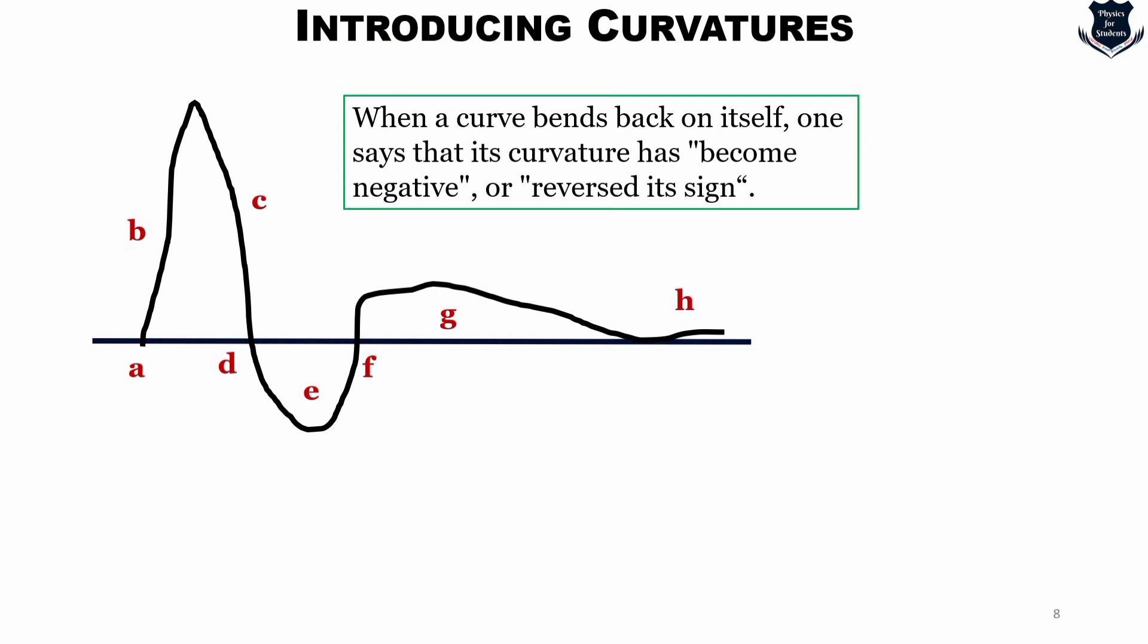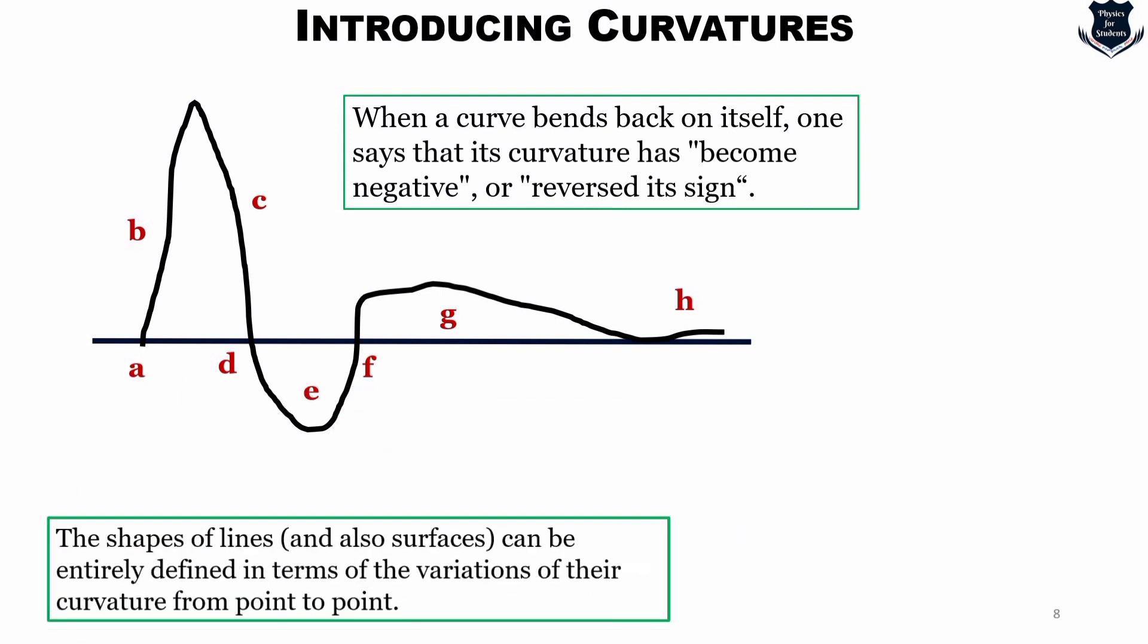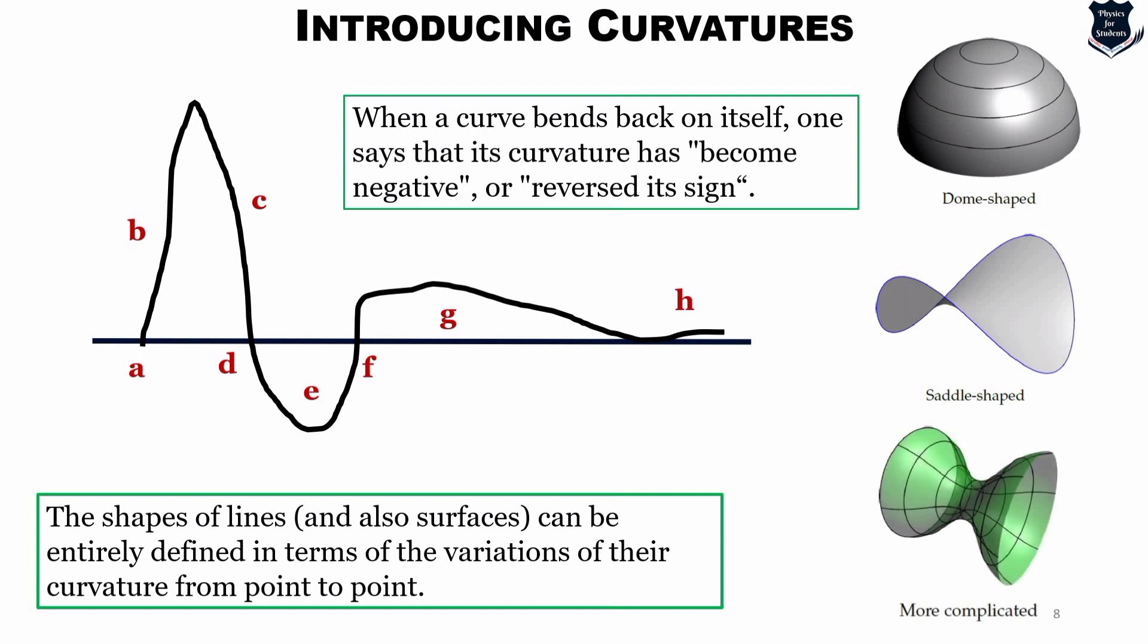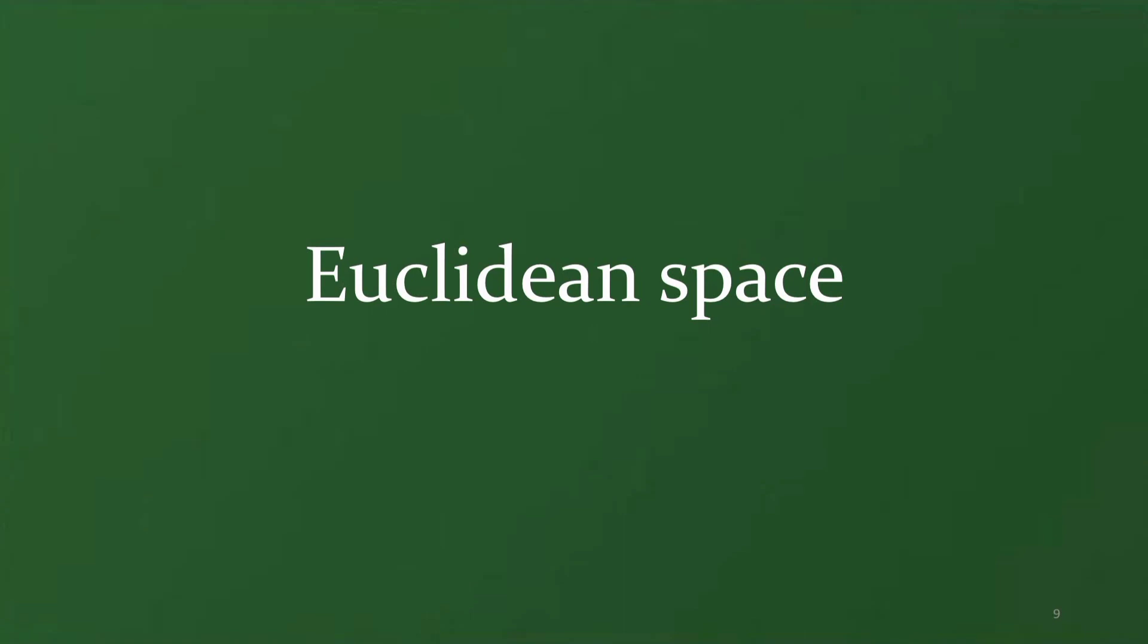So from here we can deduce that when a curve bends back on itself, one says that its curvature has become negative or reversed its sign, and the shape of lines and surfaces can be entirely defined in terms of the variations of the curvature from point to point. Further curvatures which we are not showing in this video but I have shown in earlier videos are related to non-Euclidean and further complex curvature like dome shape, you get a saddle shape which has got a negative curvature and further complicated curvatures. So this is a very naive and simple example of what is a curvature.